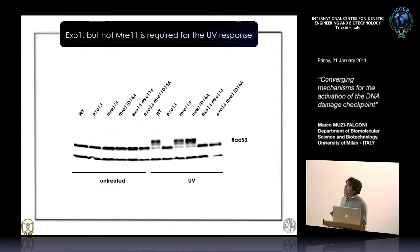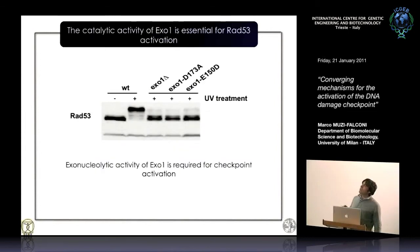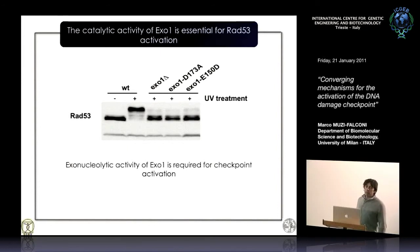So nucleotide excision repair is not enough. You need NER, but there must be some downstream event that is XO1-dependent in order to activate the kinase. And it's not only the XO1 protein you need — you also need its nuclease activity, as two catalytic site mutants are as dead as the deletion.